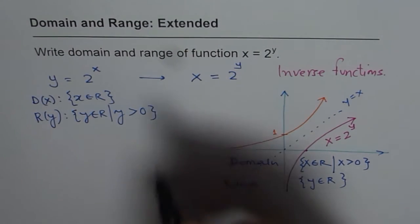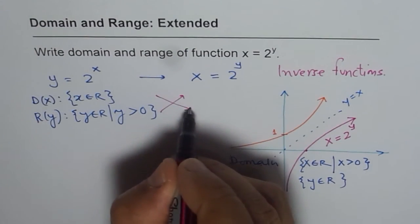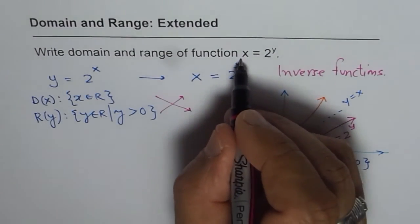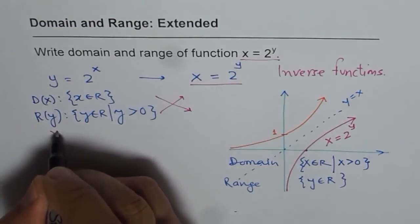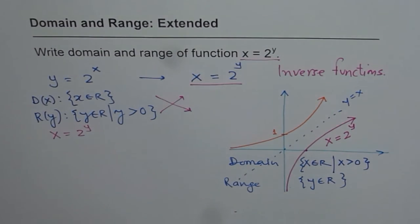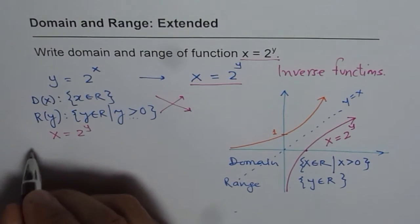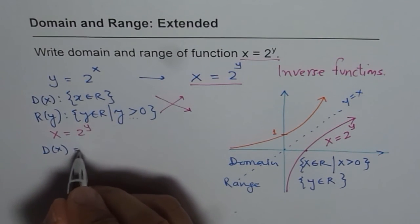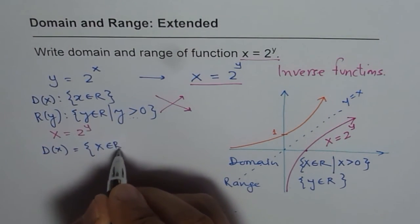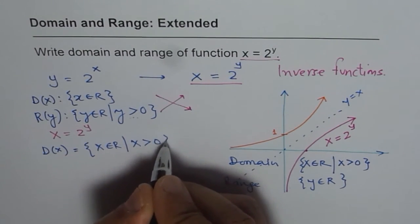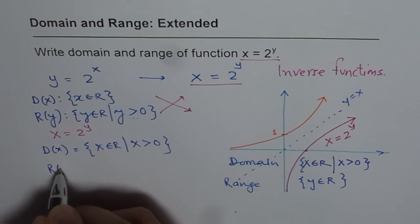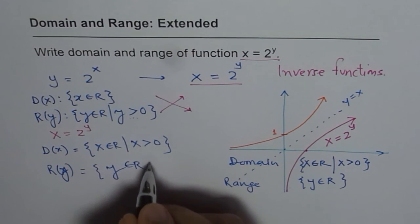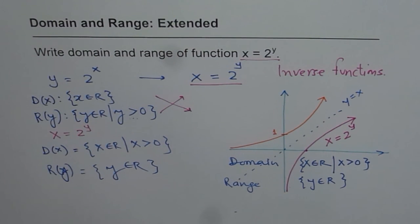When you find the inverse, the domain and range switch. Therefore, for the given function x equals 2 to the power of y, the domain and range should be switched. The domain becomes x belongs to real numbers where x is greater than 0, and the range has no restriction — y belongs to real numbers. So both ways you can solve this question.